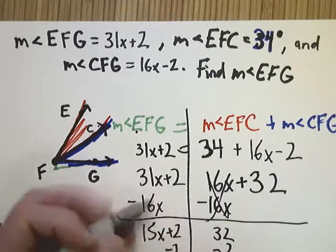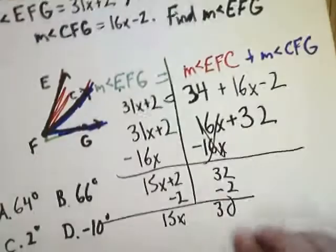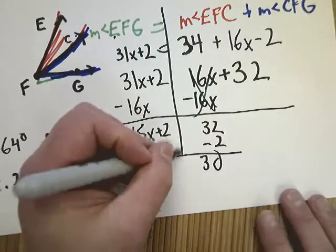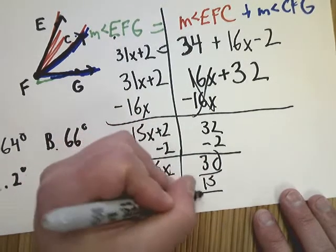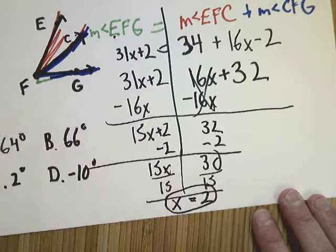Subtract 2 from both sides. I'm not going to bore you with the long talk about how to do that. Hopefully if you're at this point, you're pretty good at solving equations. X equals 2.